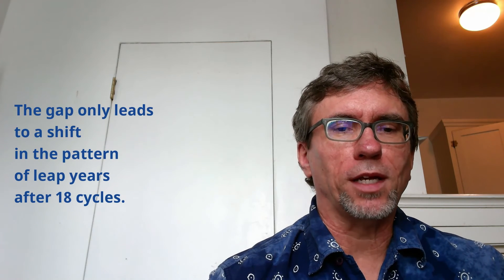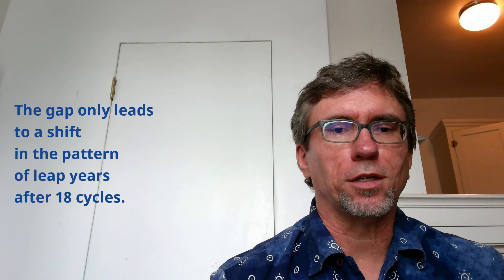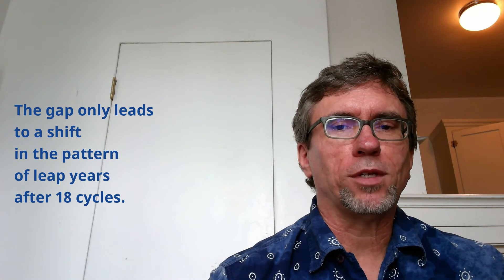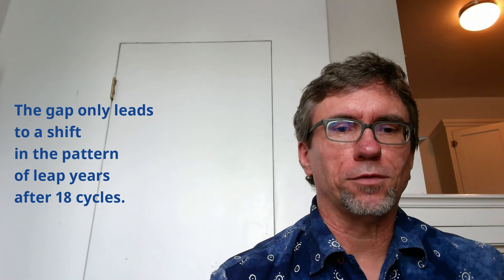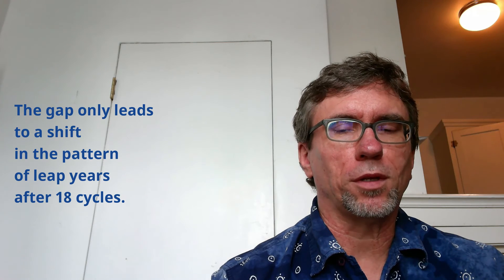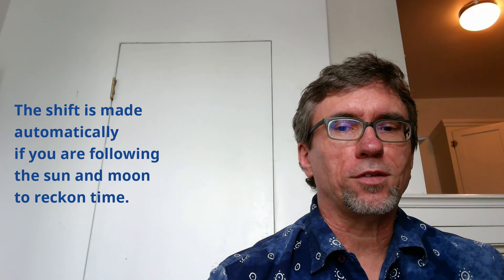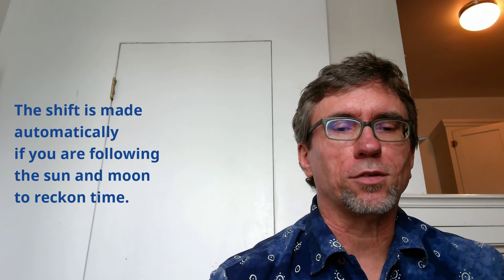At some point, around 18 cycles of 19 years, there will have to be a small shift in the repeating pattern of leap years, which I will explain in one of the later videos. But in an observed calendar, such as Muhammad left behind, that shift will take place naturally, which I will also explain.